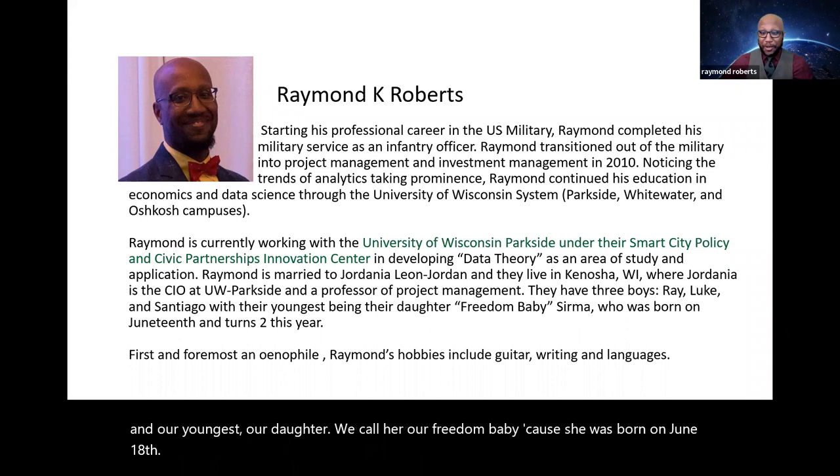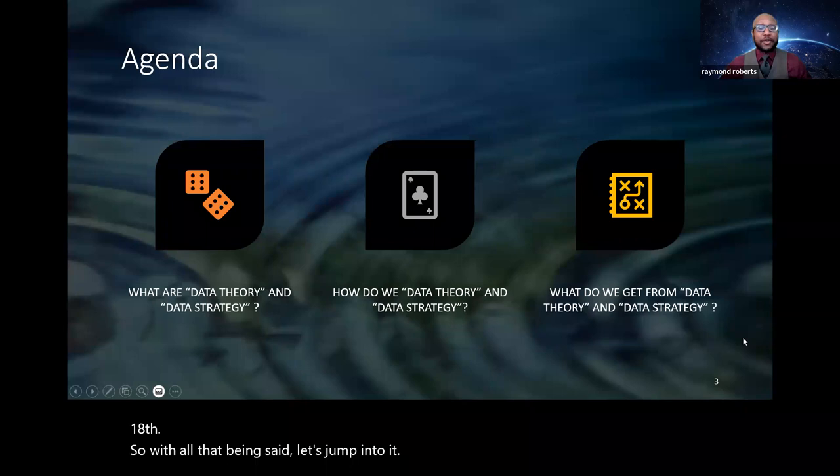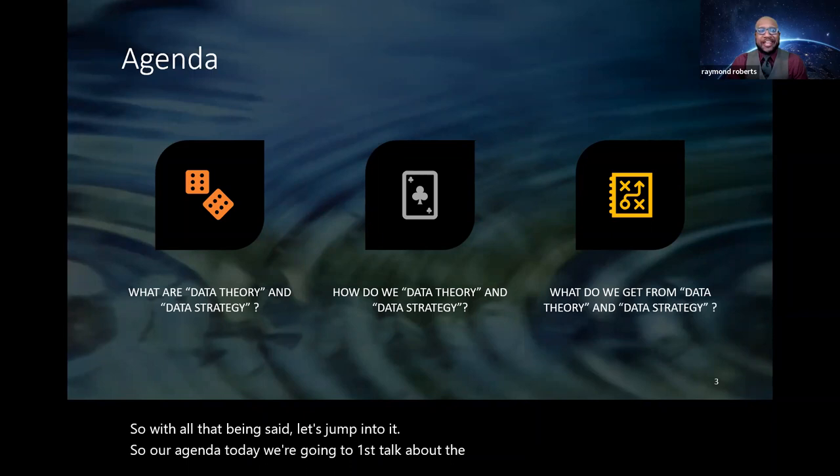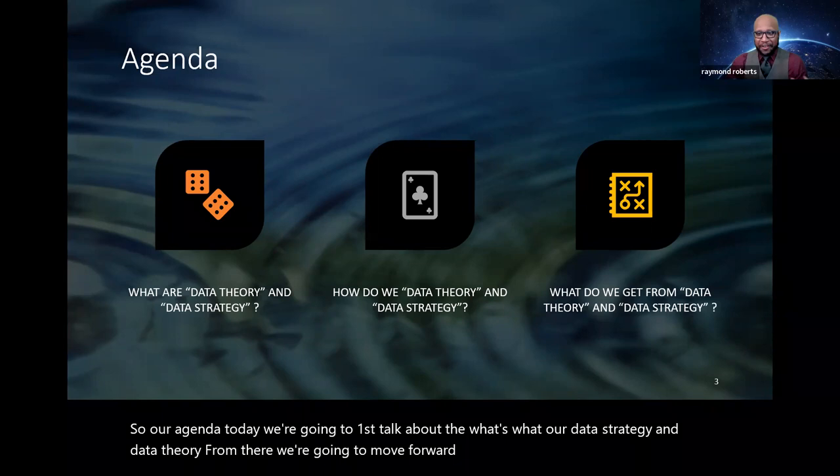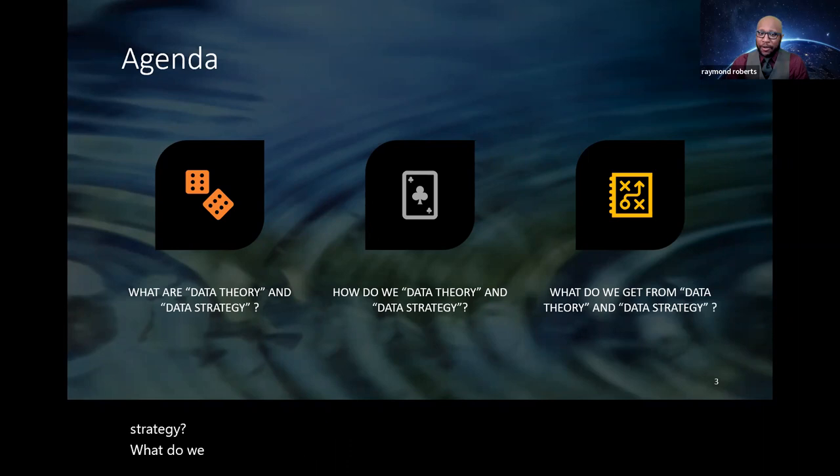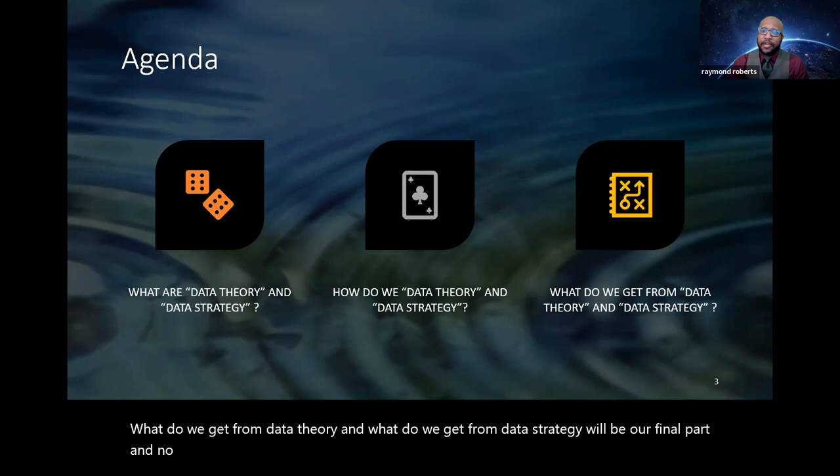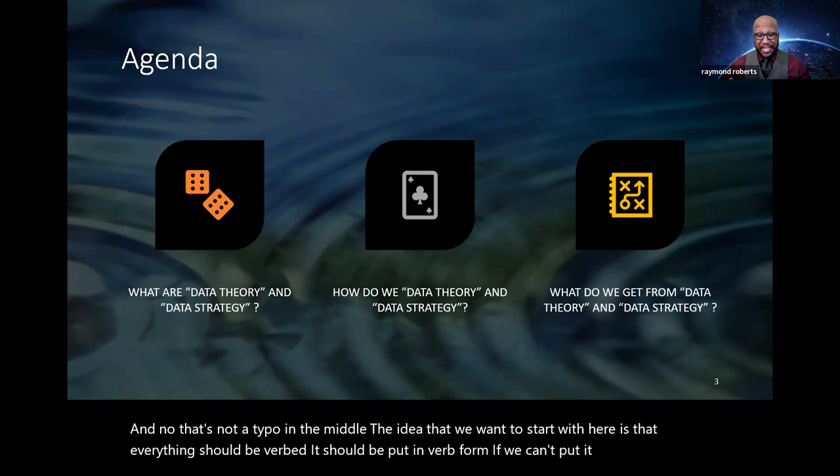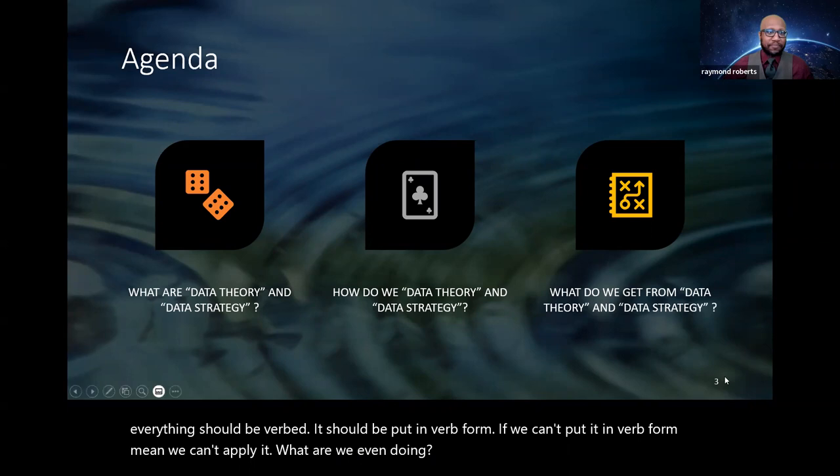So with all that being said, let's jump into it. So our agenda today, we're going to first talk about the what's. What are data strategy and data theory? From there, we're going to move forward to how do we data theory and data strategy? What do we get from data theory? And what do we get from data strategy would be our final part. And no, that's not a typo in the middle. The idea that we want to start with here is that everything should be verbed. It should be put in verb form. If we can't put it in verb form, meaning we can't apply it, what are we even doing?